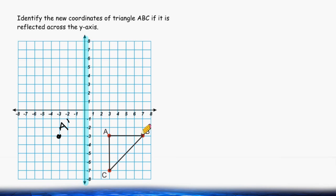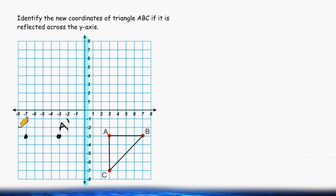If you take a look at point B, we can see that it is seven units to the right of the y-axis. So we do the opposite, which is to move to the y-axis and then seven units to the left — one, two, three, four, five, six, seven. And this is the new location of point B.